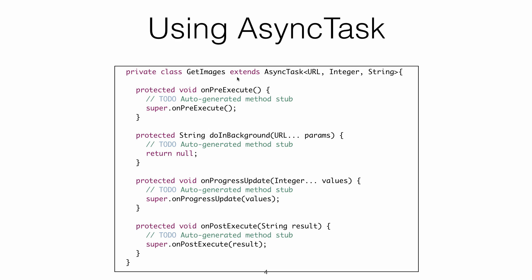Here we have an extended AsyncTask example. There is a class called GetImages which extends AsyncTask. You can see the three generic types: URL is the input type, Integer is the progress type, and String is the result type returned by doInBackground. The input URL is passed to doInBackground, Integer is the input parameter to onProgressUpdate, and String is returned by doInBackground and received by onPostExecute.